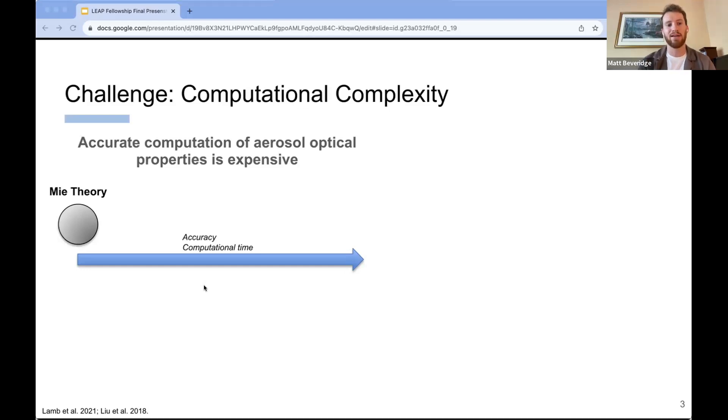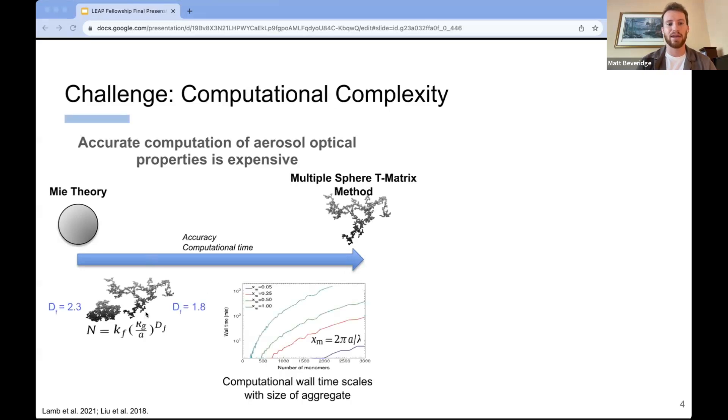One of the simpler methods of doing optical parameter approximation is something called Mie scattering theory. This would be essentially modeling this entire aerosol aggregate as a sphere, and then analytically computing scattering properties off of that. More complex methods such as MSTM multi-sphere T matrix represent the aerosol as an aggregate of particles in space. But the issue with that is that they're more computationally expensive, prohibitively so, especially for larger aggregates that are present in the atmosphere.